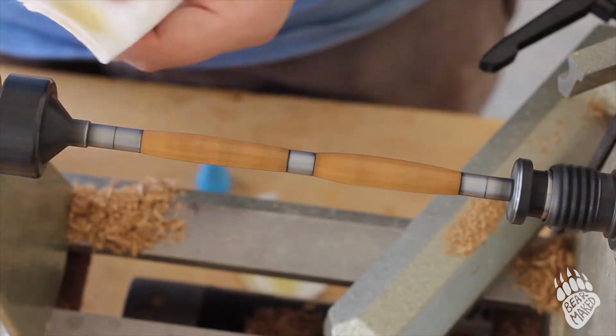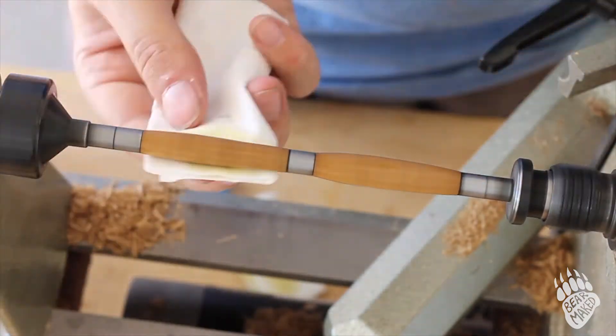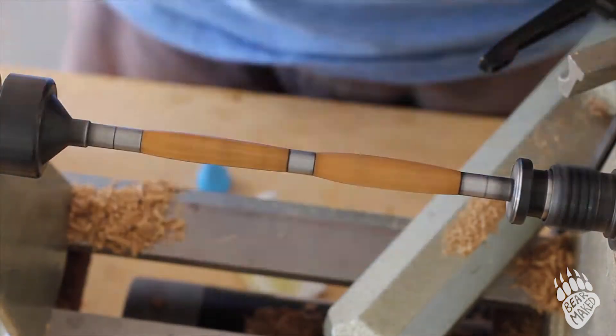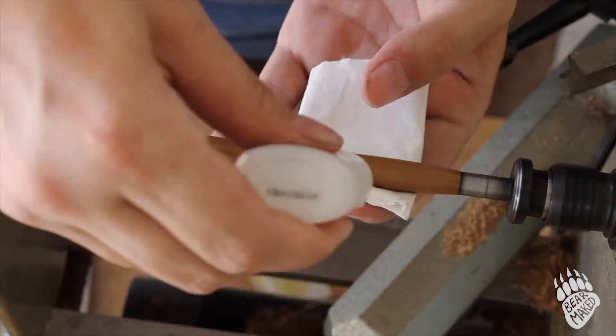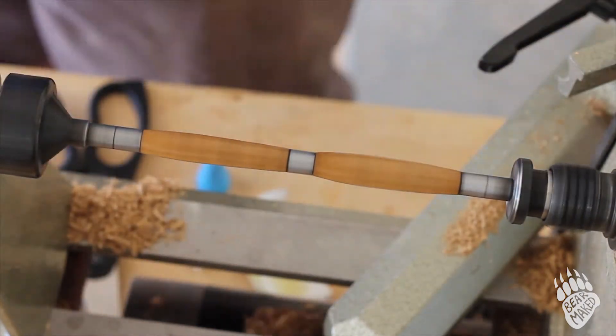You dab the super glue onto the paper towel or whatever you're using, right where it's touching the wood, so it gets rubbed in. And then you do a couple coats using a fresh paper towel each time. Gives it a nice smooth finish.